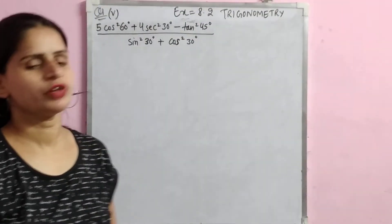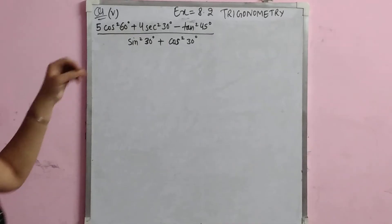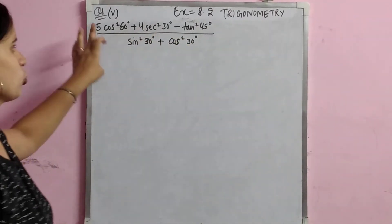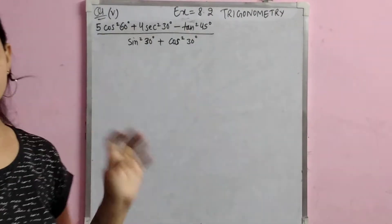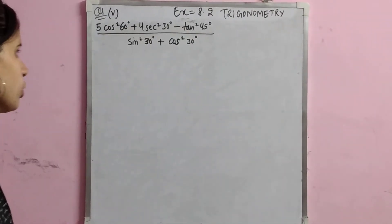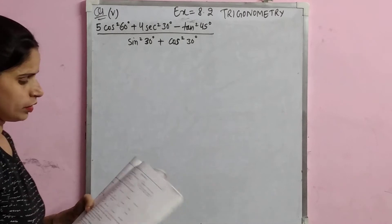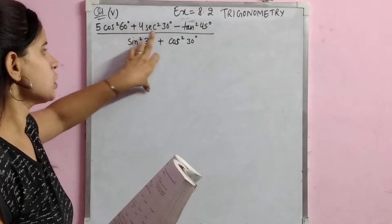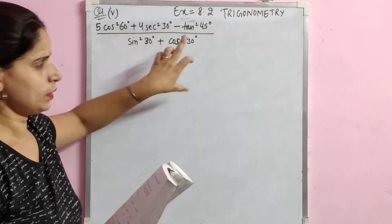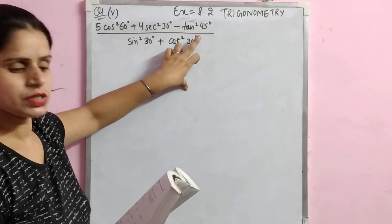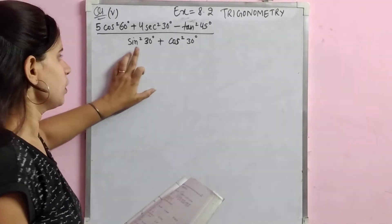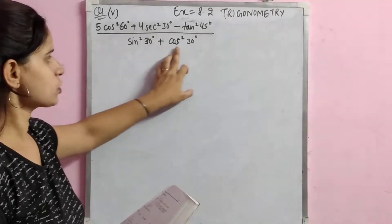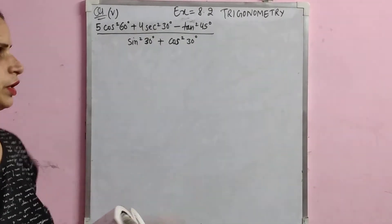Okay, now students, move to the next question. Exercise 1.2 Trigonometry Class 10, Question No. 1 Part 5. We are going to do the question: 5 cos² 60° + 4 sin² 30° - tan² 45° upon sin² 30° + cos² 30°. So this is the value of this.